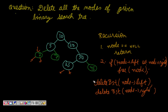When I'm done with both of them, then I check: if node->left and node->right are both null, I can free the memory. Let's see the code for how we'll do this.